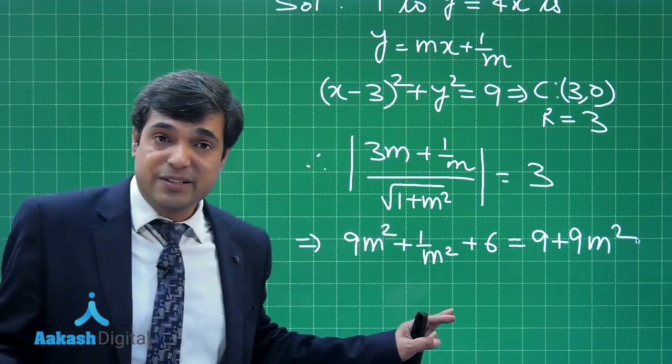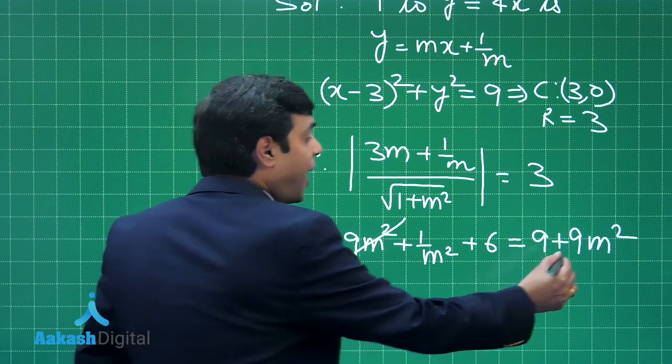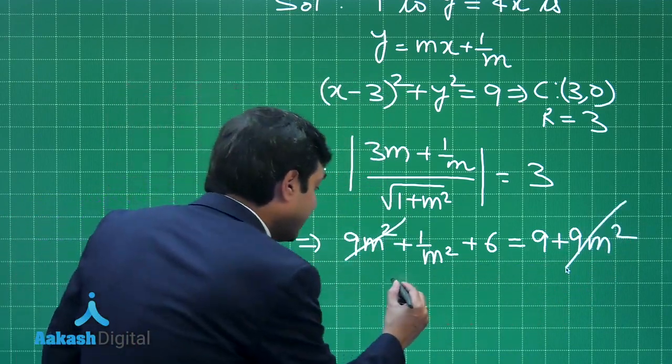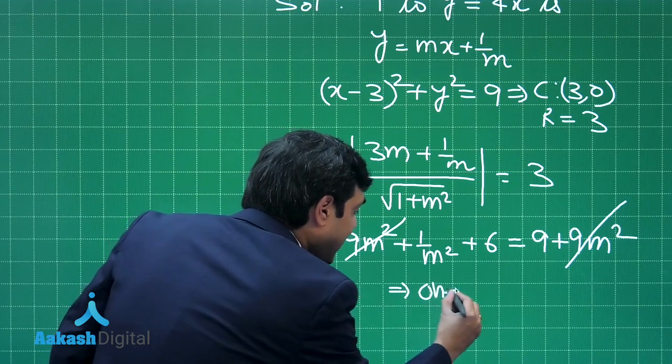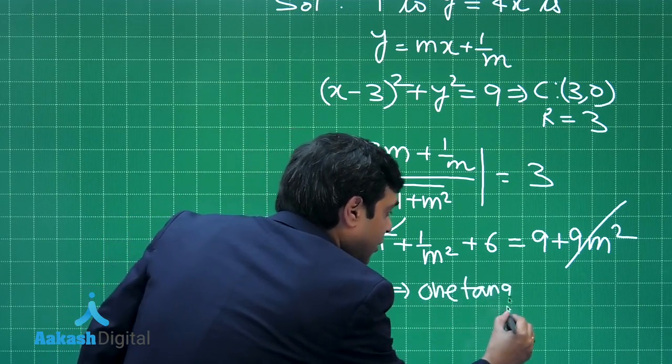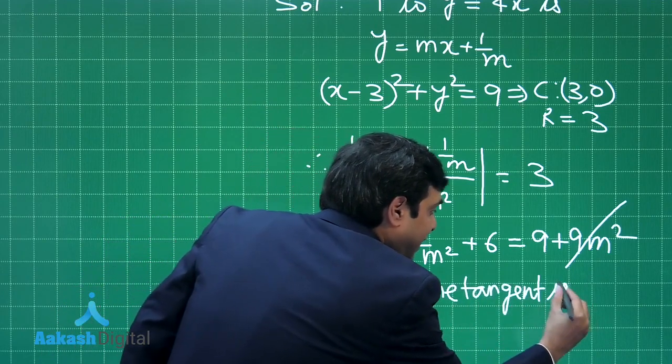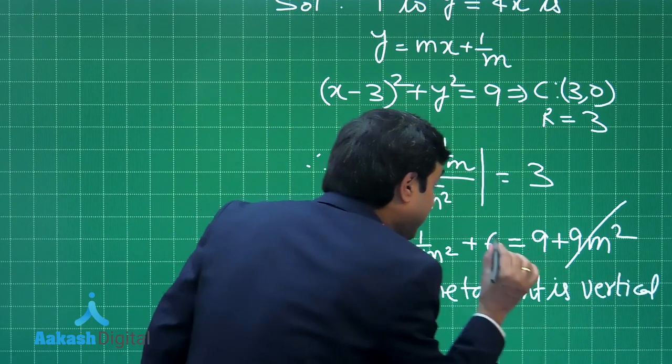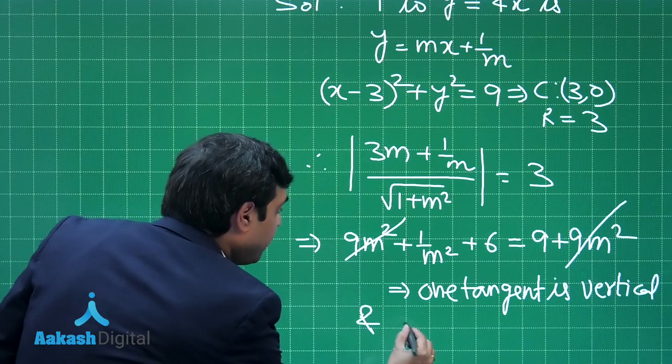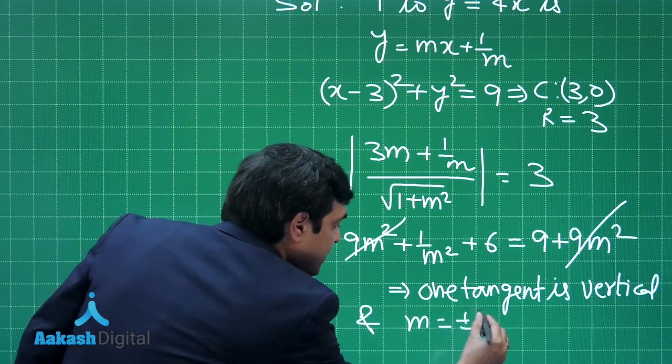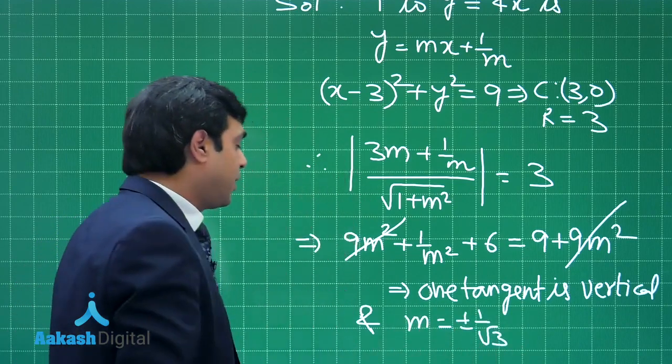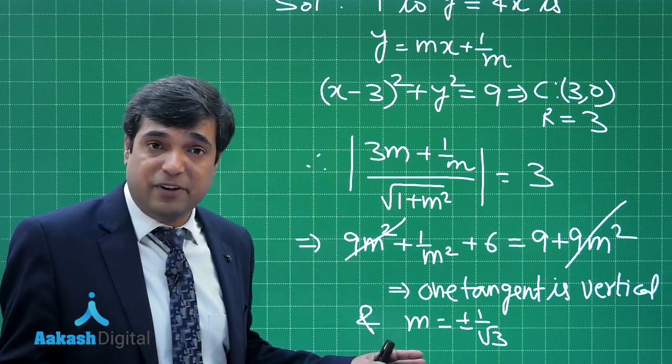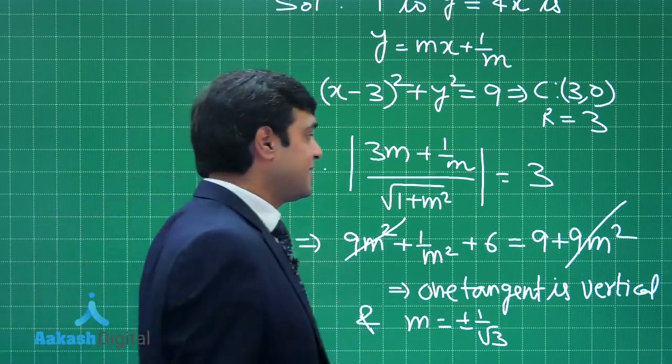You can see 9m² is cancelled. Whenever you observe that the highest degree term in equation involving m is cancelled, we can simply conclude one tangent is vertical. One tangent is vertical, that is parallel to y-axis. Rest of the 2 are obtained from m = ±1/√3, because we have 1/m² = 3. So 3 common tangents are there.